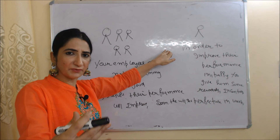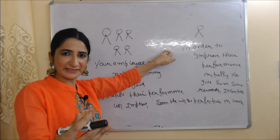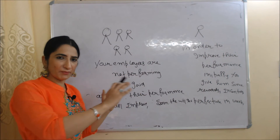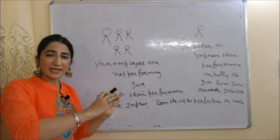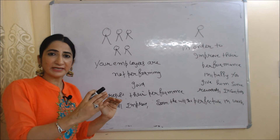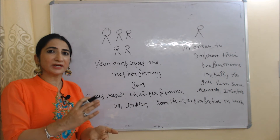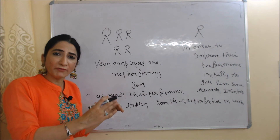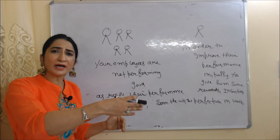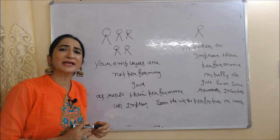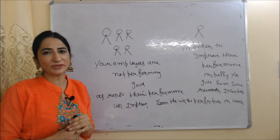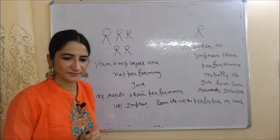The second example: suppose your employees are not performing well. In order to improve their performance, initially you give them some rewards or incentives. As a result, their performance will increase and soon they will get perfection in their work. Now they will perform well even when you are not giving them any reward or incentive. This is called learning through conditioning.